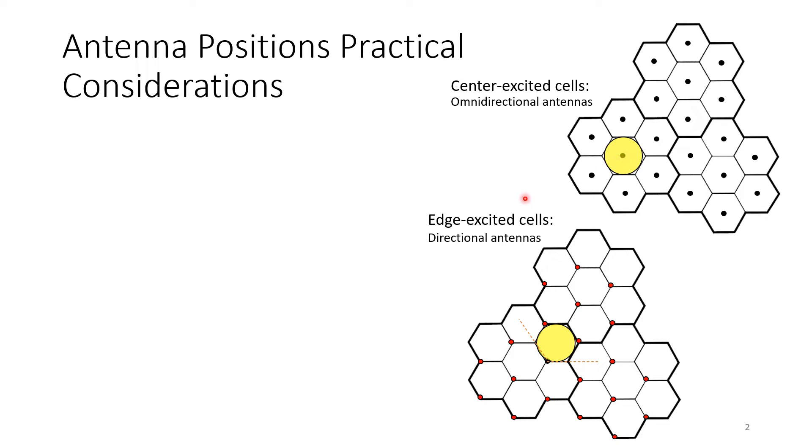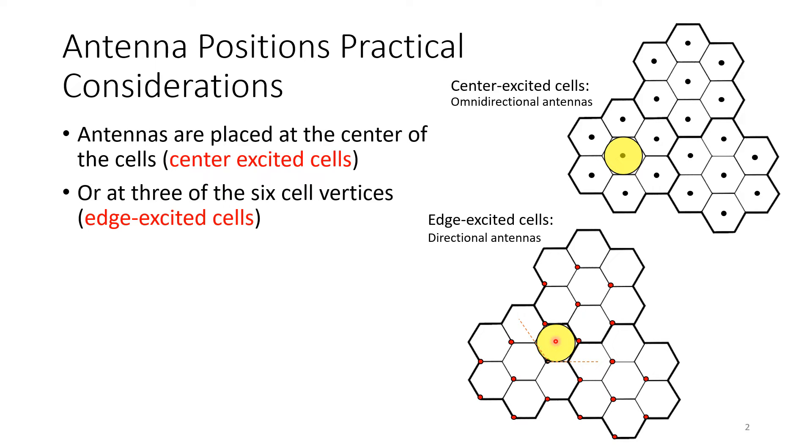We also could have edge excited cells where we can think of the antenna as being in the edge. The reason for using this type of coverage could be having some obstructions in the middle. So we have two options: either center excited where an antenna is placed at the center of the cell, or we have three of the vertices. We will have antennas like here one, two, three, and the other three will have no antennas. And this is called edge excited cells.